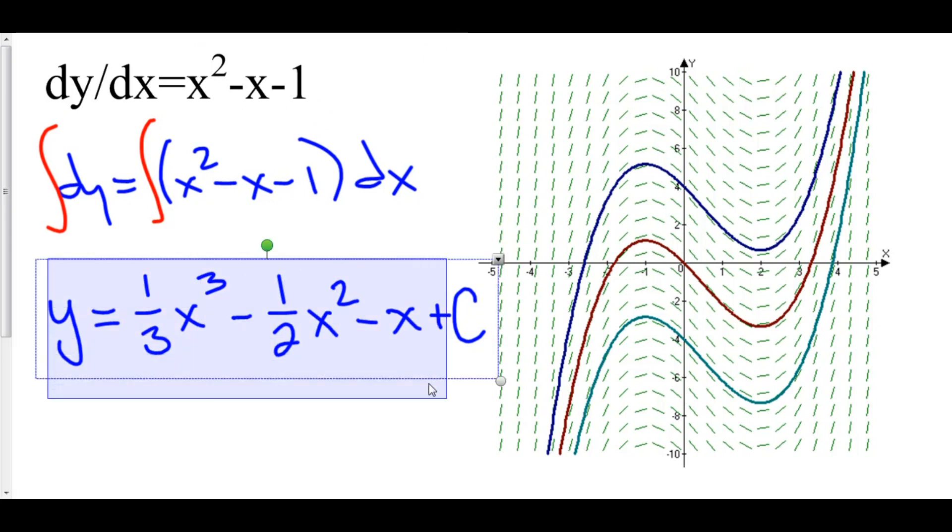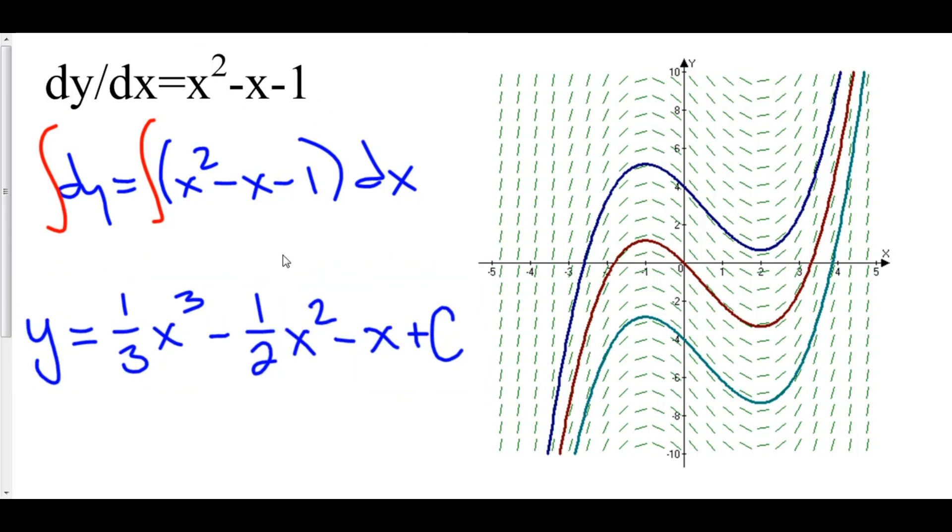So here we have our particular solution to this differential equation. Now, the answer is, what do these C's represent? Well, in this particular case, C is the y-intercept of the function y. If you were to plug 0 into x, you would get (0, C).